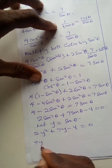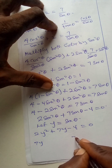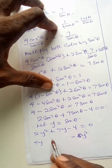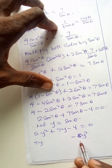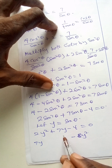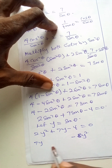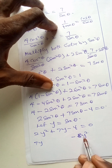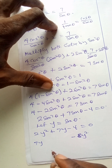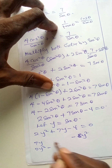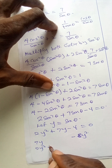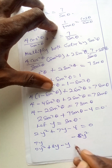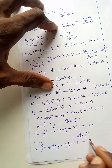The sum is 7y and the product is minus 8y squared. I have to look for two numbers that when I add or subtract give 7y, and when I multiply give minus 8y squared. Those numbers are plus 8 and minus 1, giving: 2y squared plus 8y minus y minus 4 is equal to 0.